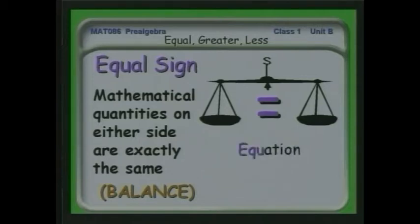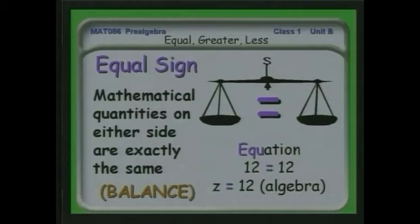You have an equation — notice that the word 'equation' has 'equ' at its root. So we can have 12 is equal to 12, something that seems very simple. But for example, we could have z equal to 12 — so we've solved for z, the unknown, and we assert that it must be identical to 12. This is from algebra.